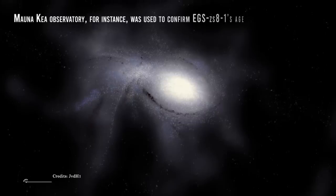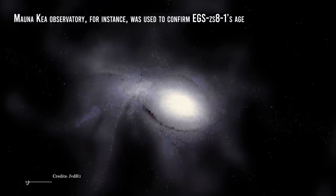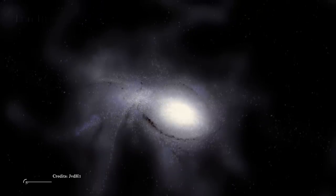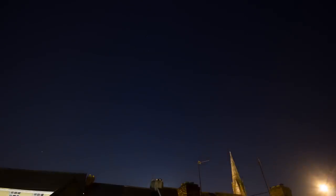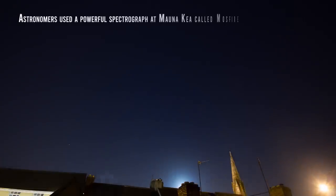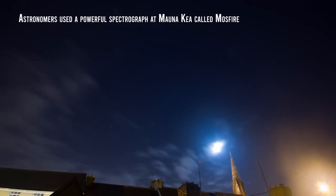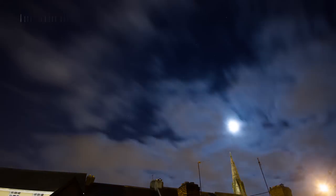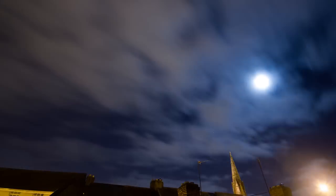Mauna Kea Observatory, for instance, was used to confirm EGS-zs8-1's age, a really ancient galaxy born right after the Big Bang. In order to assess its age, astronomers used a powerful spectrograph at Mauna Kea called MOSFIRE. This device measured the redshift towards light broadening to longer wavelengths of EGS-zs8-1.